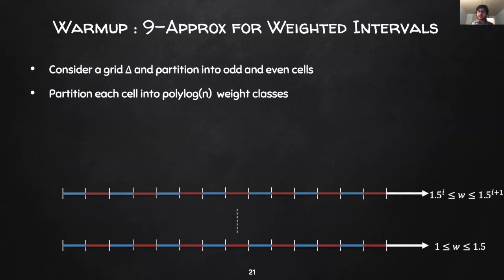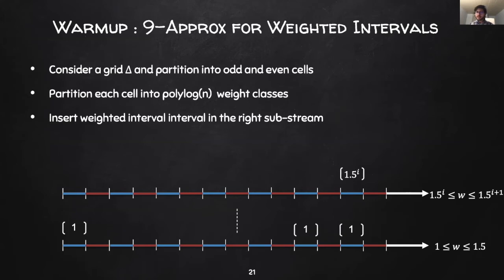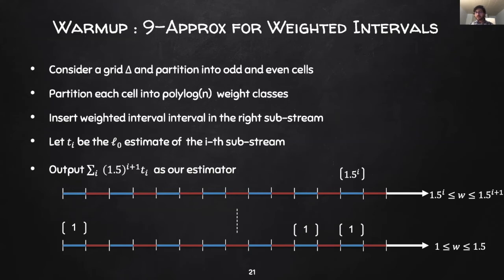We then create a new substring for each weight class as seen here. We then run L0 estimation on each substring independently. Let T_i denote the estimate for the L0 norm of the i-th substring at the end of the stream. We simply output summation over i, 1.5 to the i plus 1 times T_i as our final estimator. Note that it is clear from our previous discussion that we can implement this algorithm in turnstile streams. So let's analyze it.